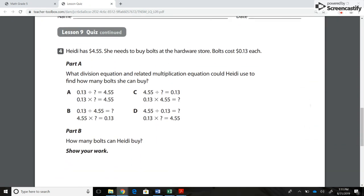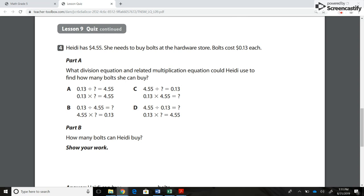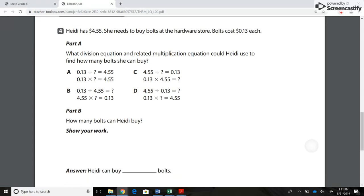Number 4. Heidi has $4.55. She needs to buy bolts at the hardware store. Bolts cost 13 cents each. Part A. What division equation and related multiplication equation could Heidi use to find how many bolts she can buy?